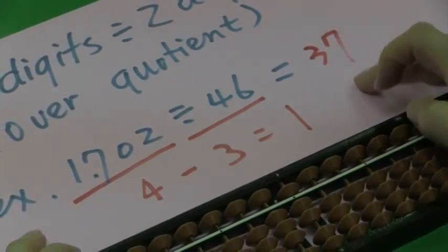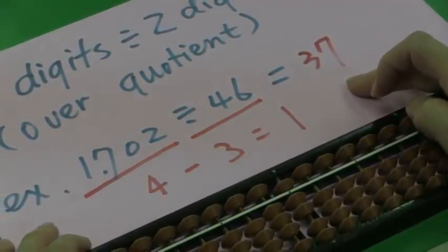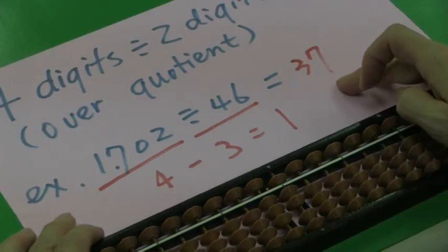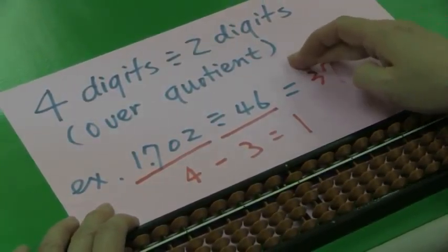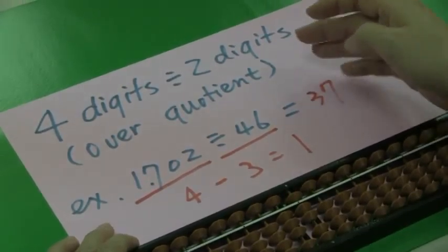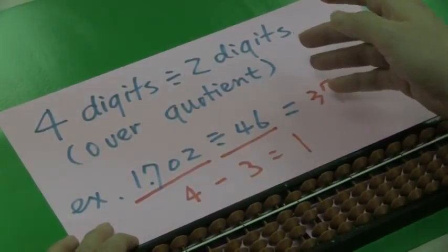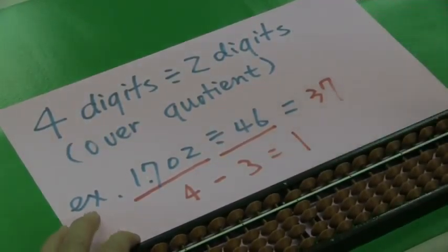Now, you have learned the question, division question, 4 digits divided by 2 digits with over-quotient problem. You now know the skill, how to use it.